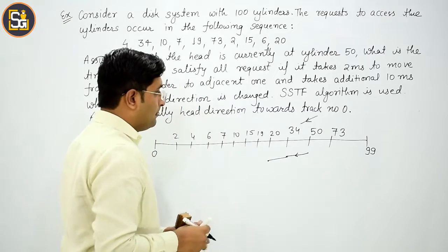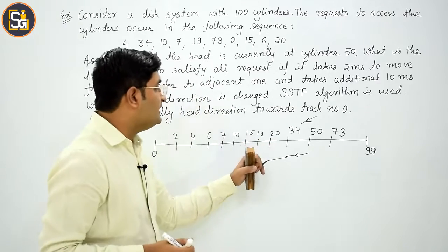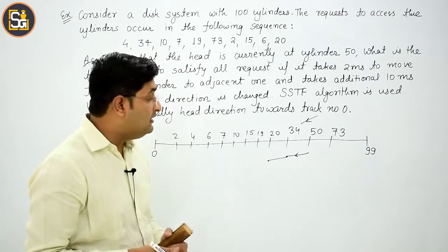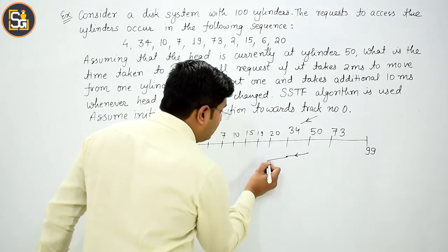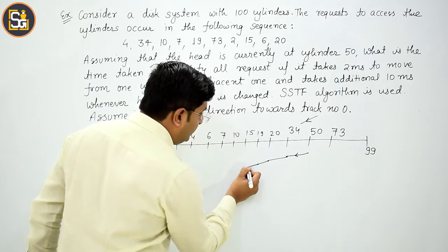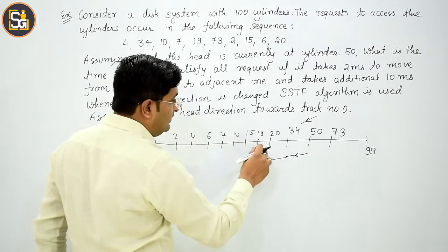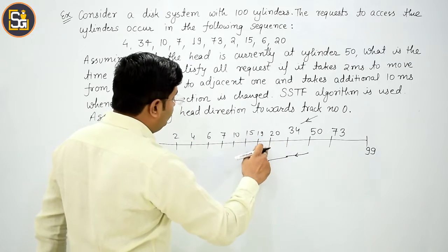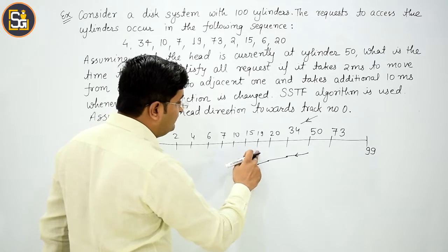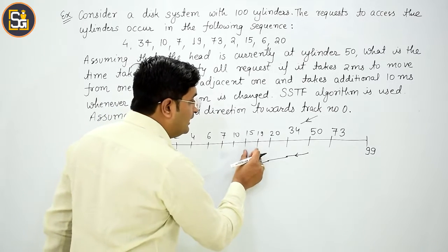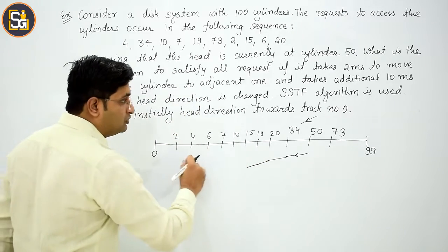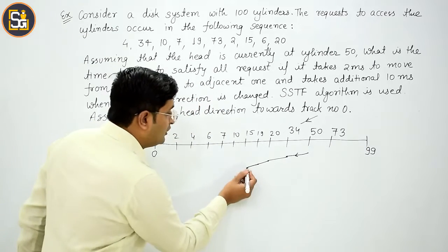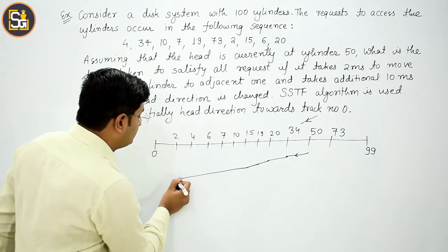Now if I go from 20 to 19, then 19 to 15. From 34 to 20, 20 to 19, 19 to 15, because here all these differences are small. And now 73 is my last request, so I will continue moving in this direction.